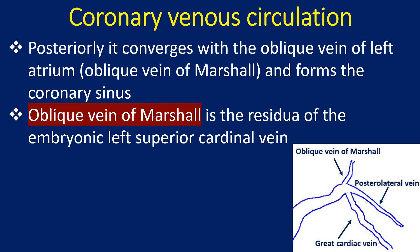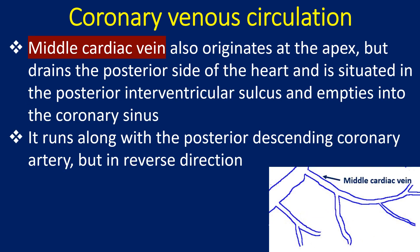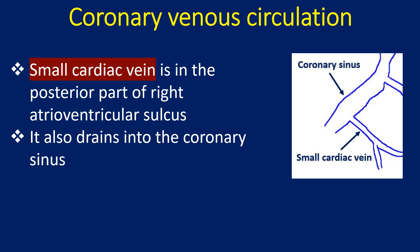The oblique vein of Marshall is the residua of the embryonic left superior cardinal vein. The middle cardiac vein also originates at the apex but drains the posterior side of the heart and is situated in the posterior interventricular sulcus, emptying into the coronary sinus. It runs along the posterior descending coronary artery but in the reverse direction. The small cardiac vein is in the posterior part of the right atrioventricular sulcus and also drains into the coronary sinus.